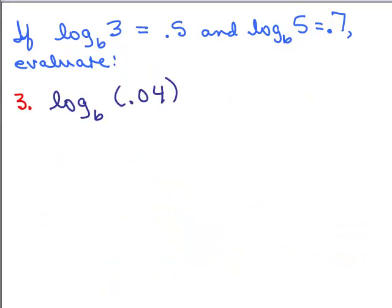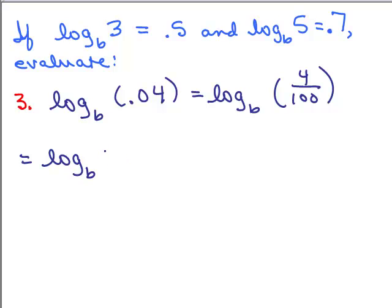Here's another one for you to try on your own first. Put the video on pause and try that. Working with these decimals, it's usually going to be easier to put it in terms of a fraction. So what is this? 0.04, that means 4 hundredths. So we really have the log base B of 4 hundredths. I've got the log of 3 and the log of 5, so let's reduce that. That's 1 over 25.